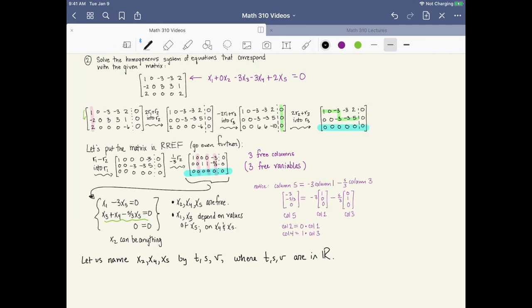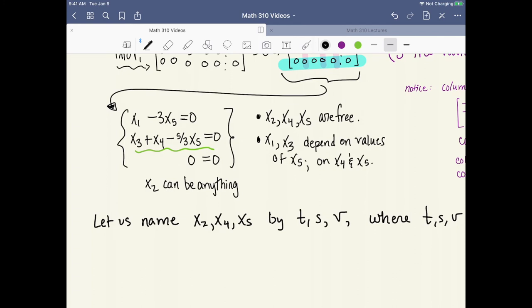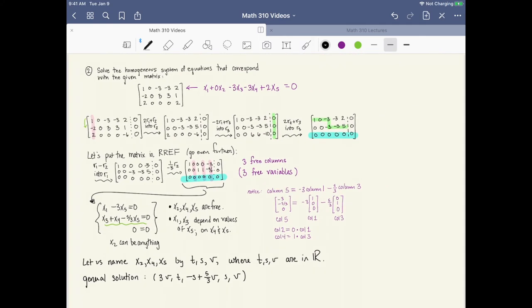That means that when I write down the complete set of solutions, a general solution, a general solution is something of the form 3v, t, minus s plus 5 thirds v, s, and v. Let's unpack that a little bit. But this is the solution. And by the solution, I mean the family of infinitely many solutions, whereby I could take v, t, and s to be anything.